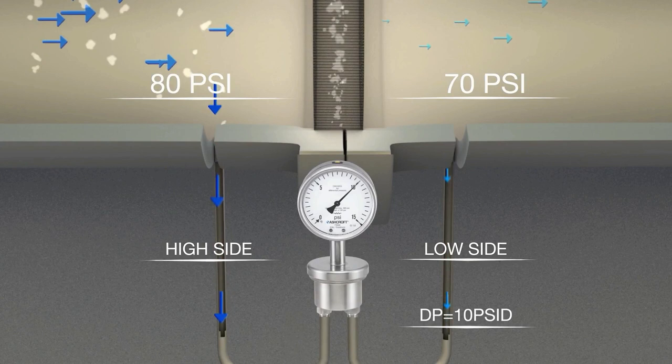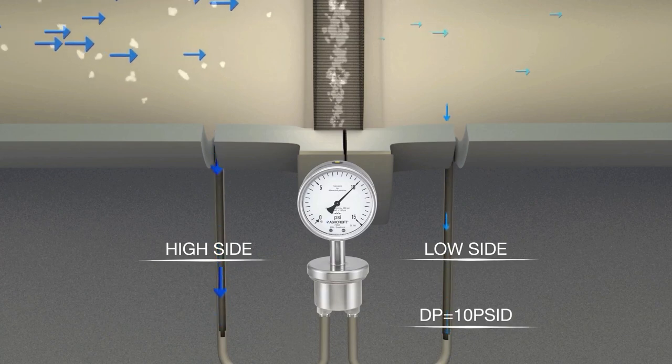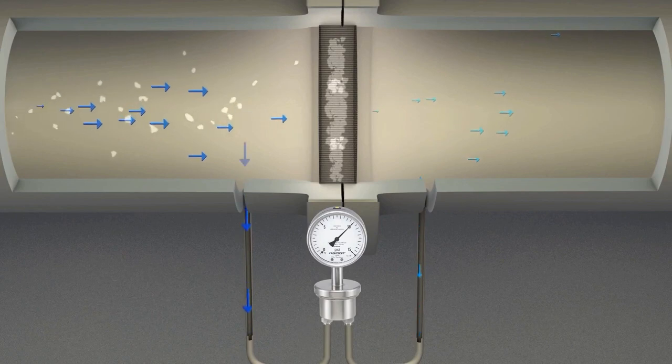When specifying a differential pressure instrument, there are two important factors to consider. The first is the DP range, which is based upon the most difference in pressure that the restriction is likely to produce. The second is the instrument's ability to contain the static pressure, which is simply the pressure in the line. While the differential pressure remains the same, a higher line pressure may require an instrument rated for higher static pressure.